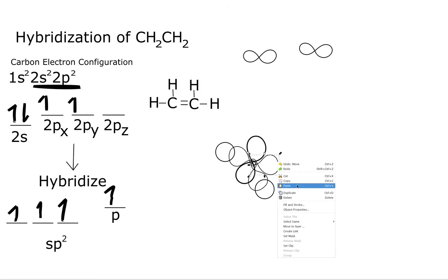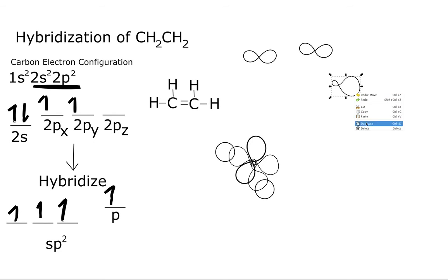So we're going to duplicate this so we have another sp2. But we have three. So we have three sp2 orbitals. Remember, we're looking at this carbon now. So let's make our sigma bond.